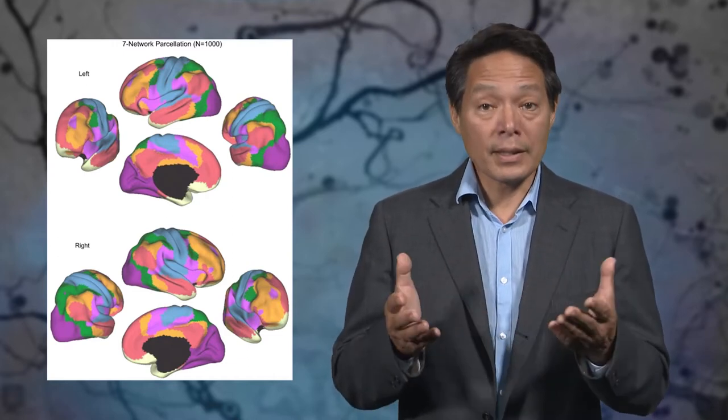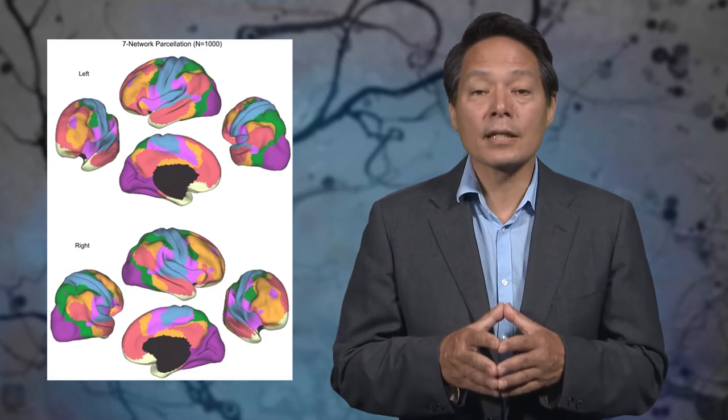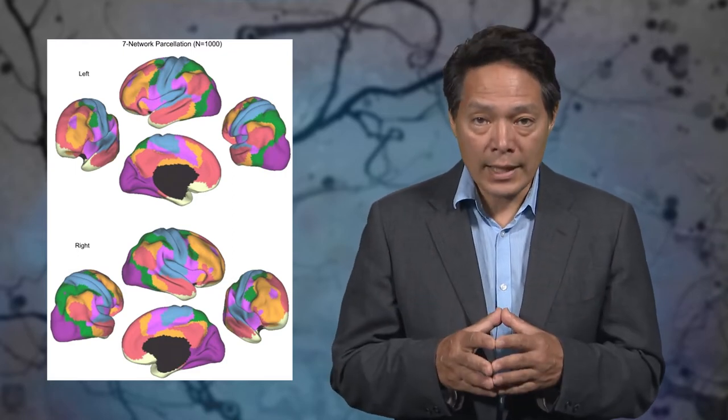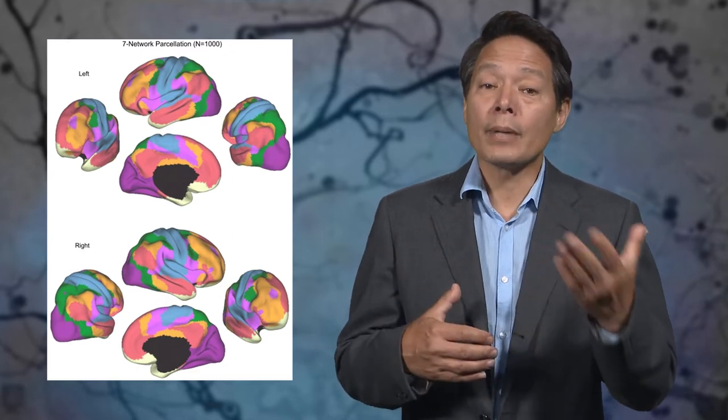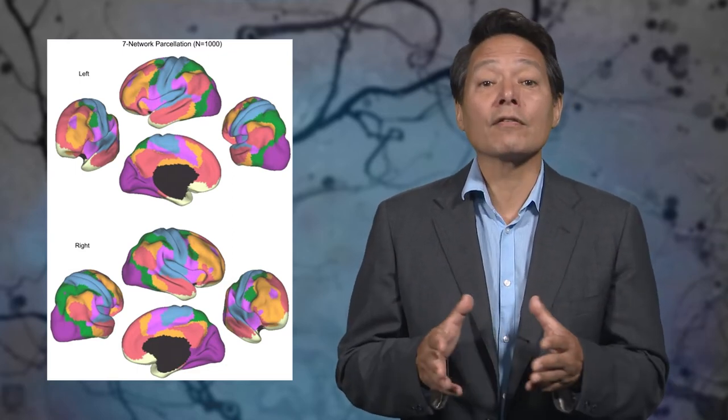And also, not shown here, is another subcortical structure, the amygdala, which plays several roles, including the processing of potential danger and the triggering of associated emotions such as fear or bodily reactions such as the fight or flight response.